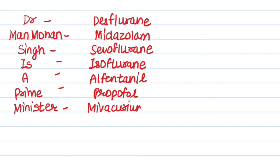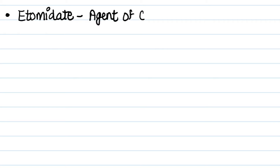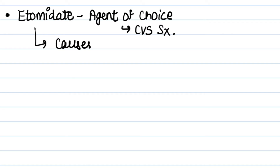The next drug is etomidate. Etomidate is the agent of choice for cardiovascular surgery, and it causes adrenal suppression.